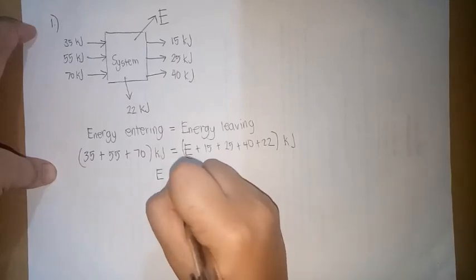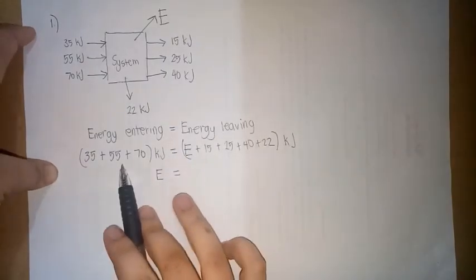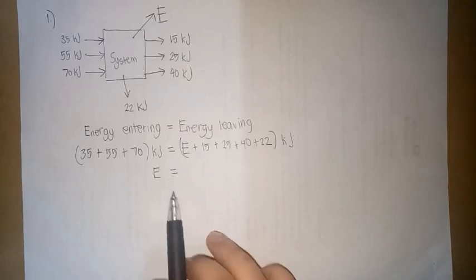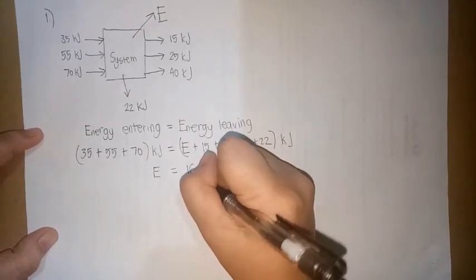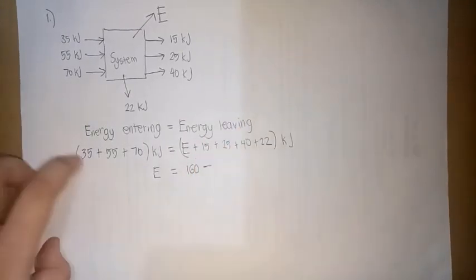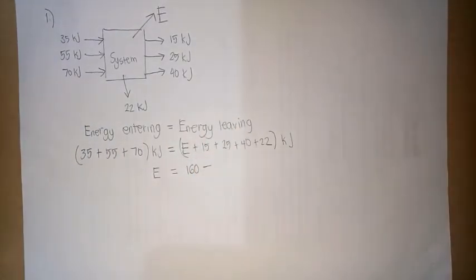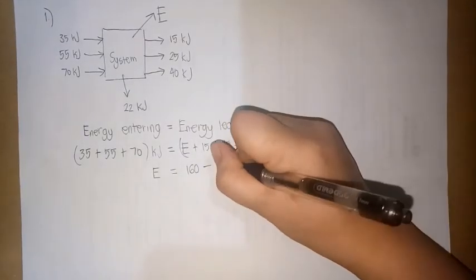So si E is equal to 35 plus 55 plus 70. So 35 plus 55 plus 70 is 160 kilojoules, minus, itatranspose natin ito, 15 plus 25 plus 40 plus 22, or 102.